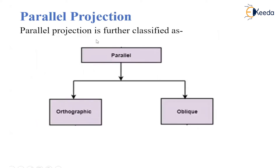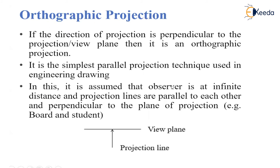Parallel projection is further classified as orthographic projection and oblique projection. First is the orthographic projection. If the direction of projection is perpendicular to the view plane, then it is an orthographic projection. As we have seen in this figure, there is a view plane on which we take the projection.